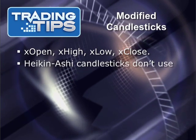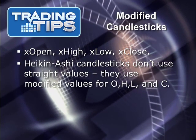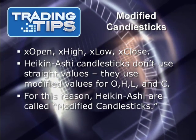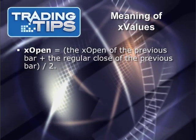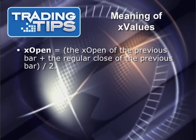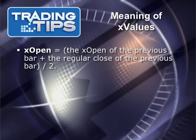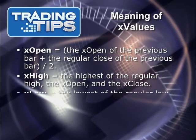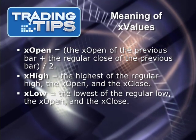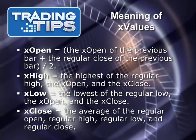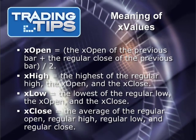You'll notice that the open, high, low, and close all have 'X' before them. That's because Heikin-Ashi candlesticks don't use straight values — they use modified values. For this reason, Heikin-Ashi candlesticks are often called modified candlesticks. The X-Open is the X-Open of the previous bar plus the regular close of the previous bar, divided by two. The X-High is the highest of the regular high, the X-Open, and the X-Close. The X-Low is the lowest of the regular low, the X-Open, and the X-Close. The X-Close is the average of the regular open, the regular high, the regular low, and the regular close.